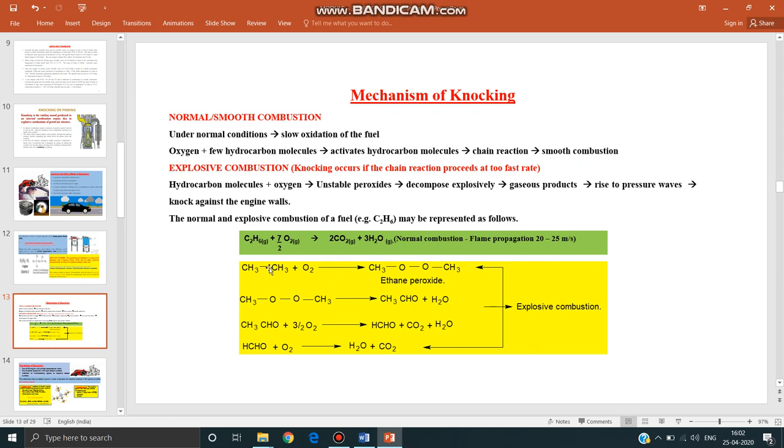So here I have taken one simple example to explain this knocking process. In normal combustion process, the chemical fuel combines with oxygen and produces activated hydrocarbon molecules. These activated hydrocarbon molecules react with one more molecule of hydrocarbon and produce yet another activated hydrocarbon. So like this, chain reaction occurs.